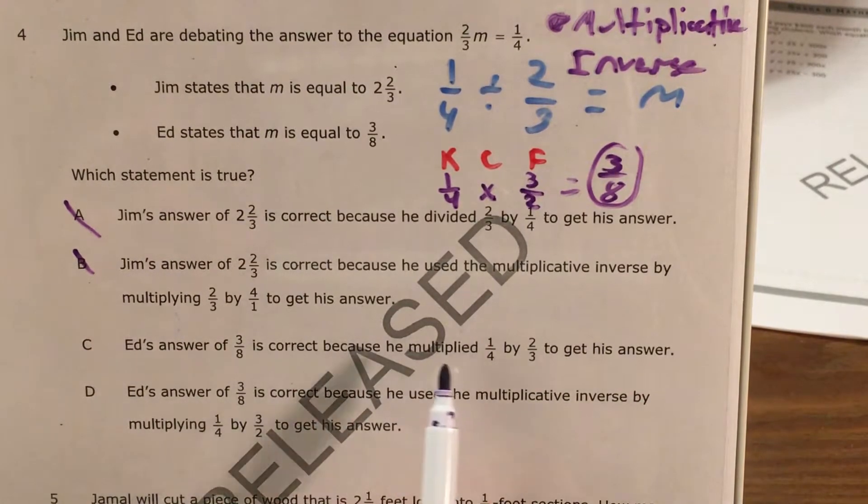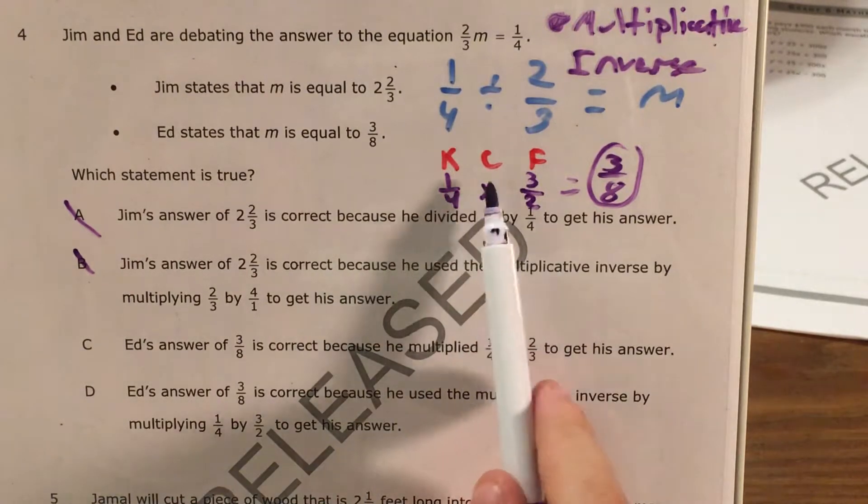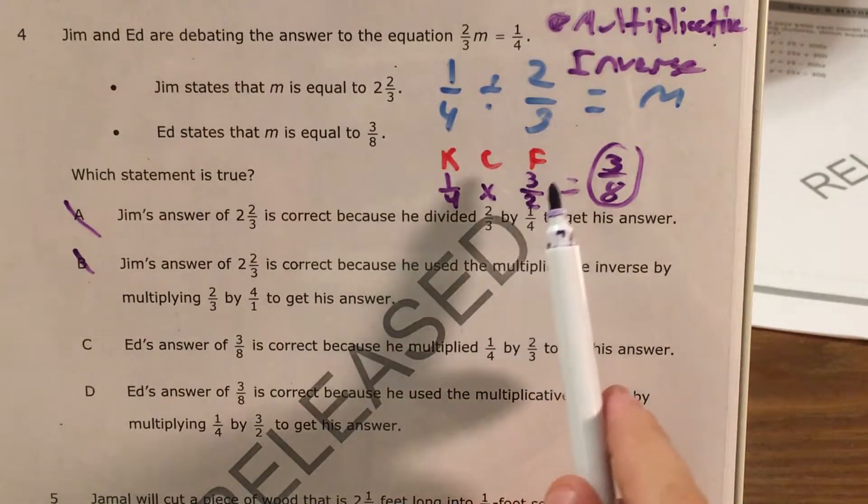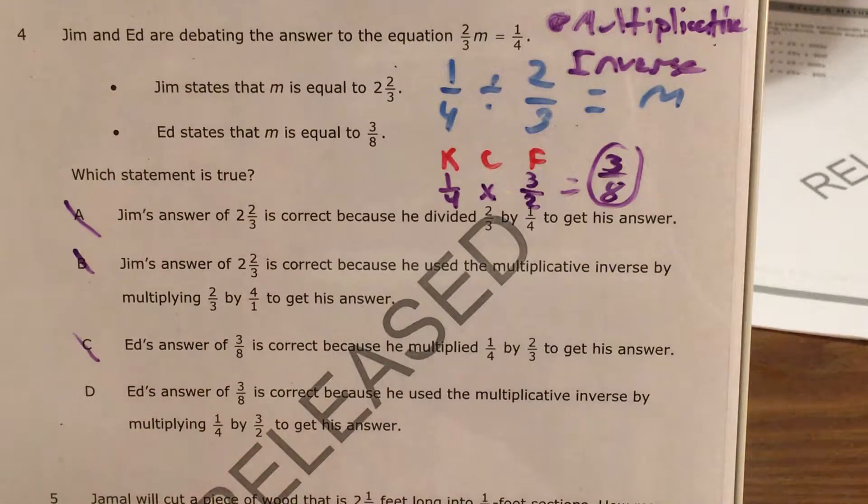Ed's answer of three-eighths is correct because he multiplied one-fourth by two-thirds to get his answer. Well, we didn't multiply one-fourth by two-thirds, we multiplied one-fourth by three-halves. So it's probably not c, but let's look at d.